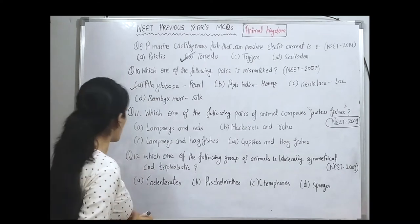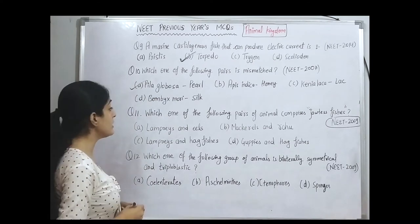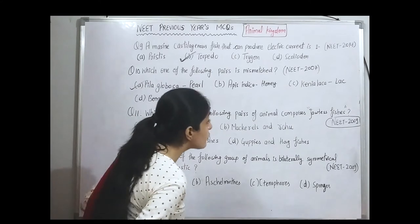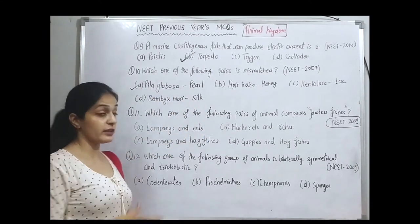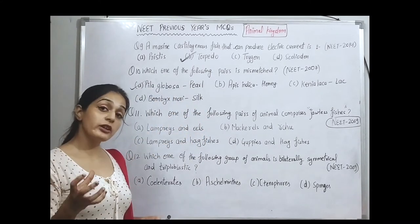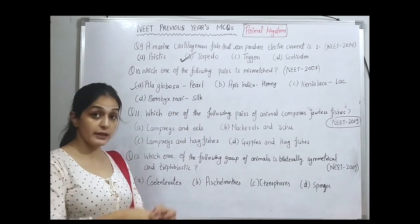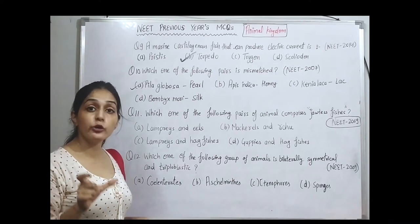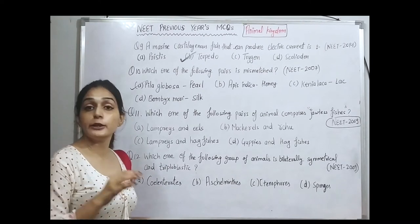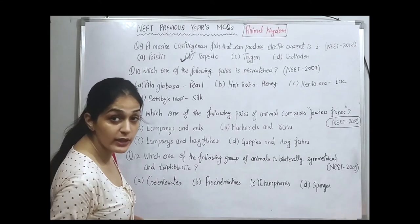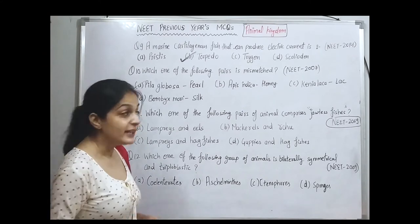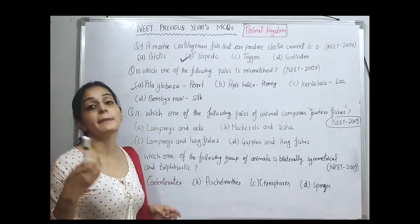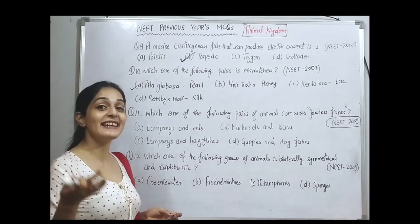The next question asks which pair of animals comprises jawless fishes. As discussed, cyclostomes are jawless and lack scales and paired fins. Examples of cyclostomes include Petromyzon (lamprey) and Myxine (hagfish). So the correct direct answer is lamprey and hagfish.